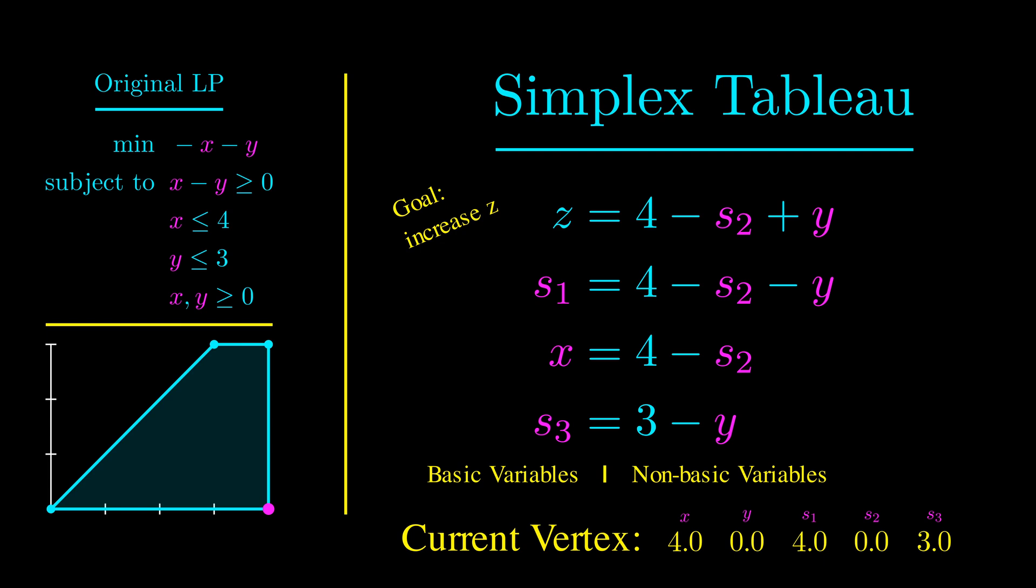Now we have a new tableau. S2 and y are the new non-basic variables, and we need to increase one of them. We don't want to increase s2 because that would decrease z. So we have to increase y, and we can increase it to 3. Any more would make s3 negative.